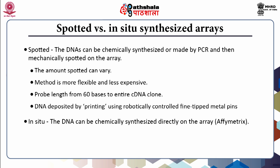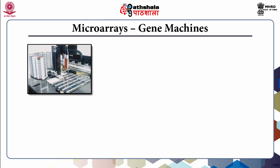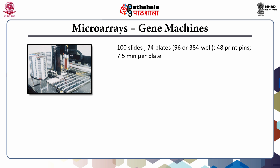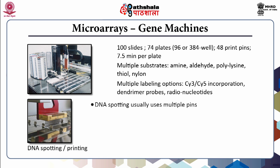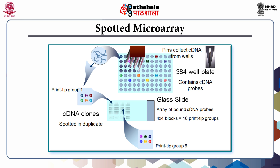In-situ manufacturing can be done by photolithography, a technology taken over by the famous company Affymetrix. This is more consistent and shorter oligonucleotides are used for array printing. Pre-synthesized oligonucleotide probes use robots printing 100 slides at 74 plates of 384 wells with 48 print-tip versions. Multiple substrates can be labeled using amines, aldehydes, polyalycines, and thylol. On-spot or in-situ manufacture uses masked nucleotides which are de-masked using photolithographic technologies.